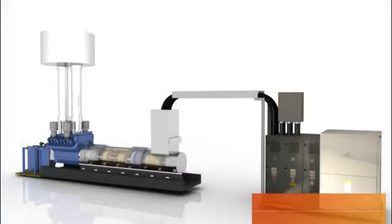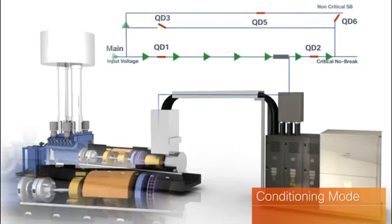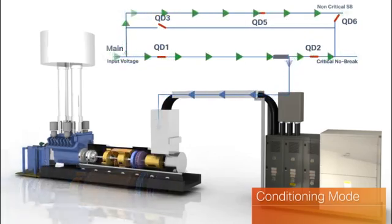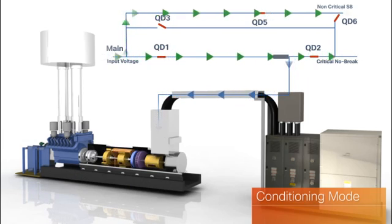In Conditioning mode, the regular utility feed into the building provides voltage to the rotary UPS. The motor rotates a device called the AccuRotor, or flywheel mechanism.